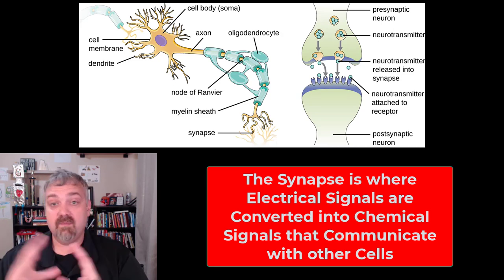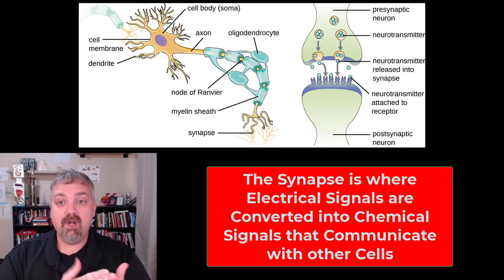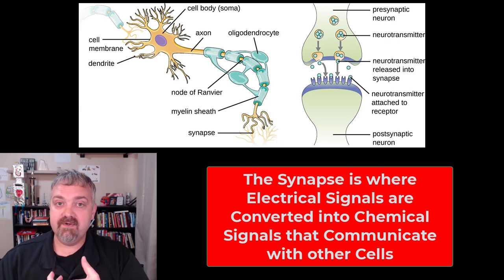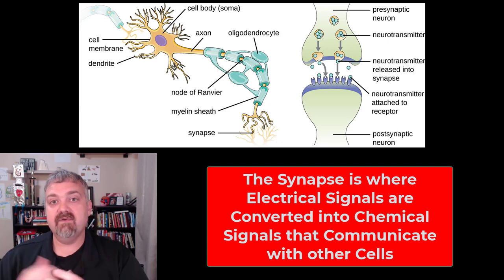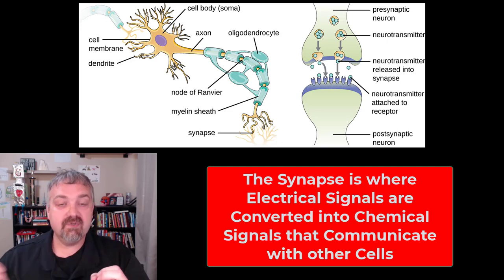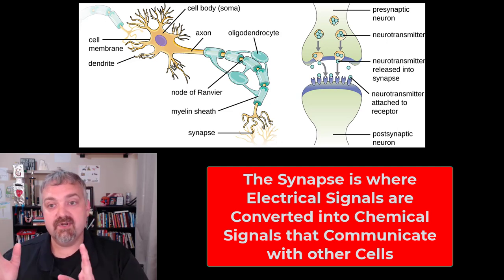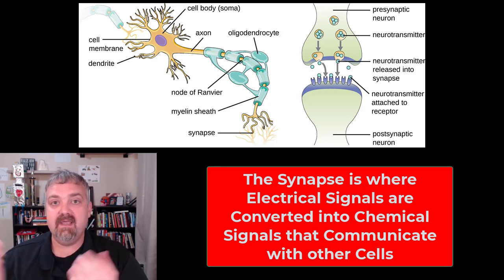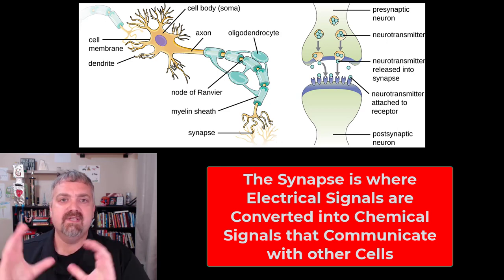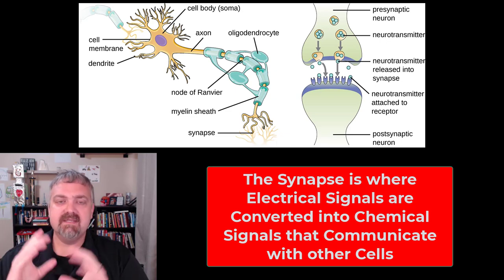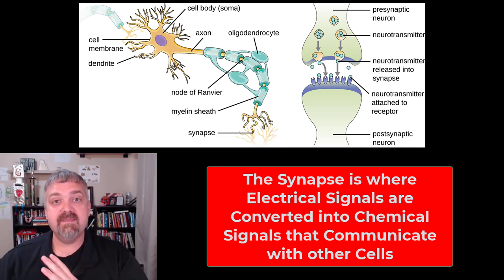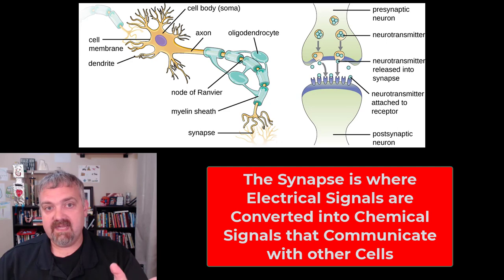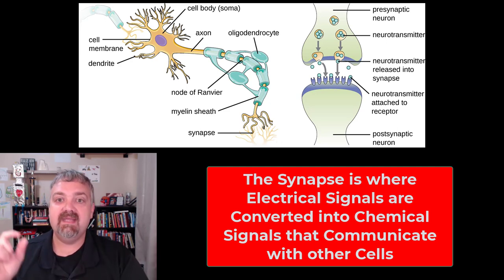And then you have the synapse. The synapse is going to be the critical area where one neuron communicates with either another neuron, a muscle, or whatever it's going to be controlling. The synapse is how the electrical signal from this neuron is turned into a chemical signal that can then cause a muscle to contract, a gland to do something, et cetera. So you have the cell body, the single axon that carries information away from the cell body, the dendrites that carry information towards the cell body, and the synapse is the site of this chemical communication.